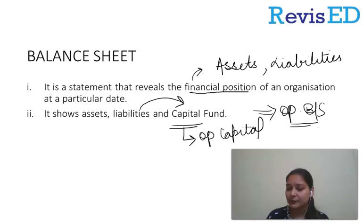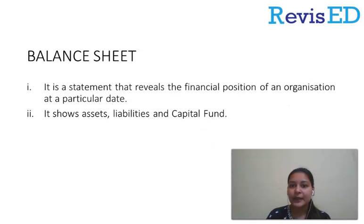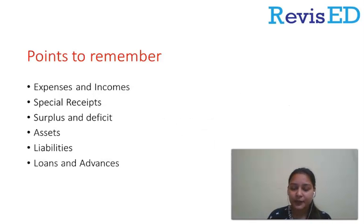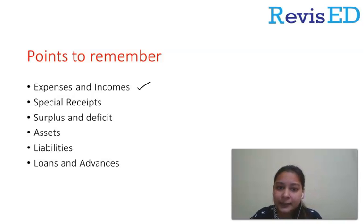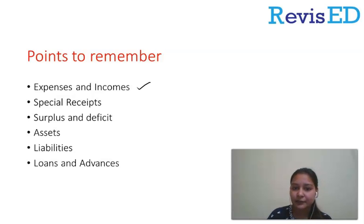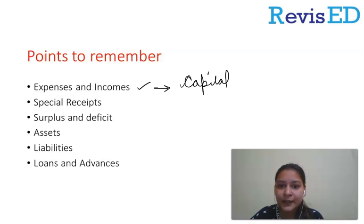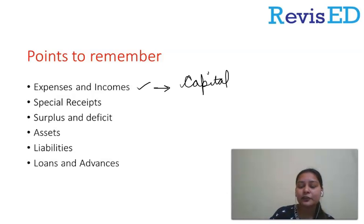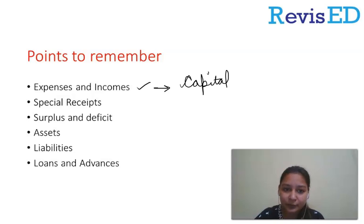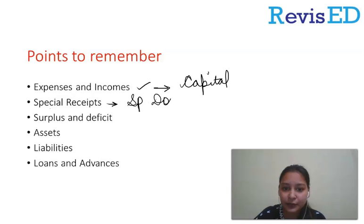There are some important points to remember while preparing the balance sheet. First: income and expenses — does the balance sheet include income and expenses of a revenue nature? No. Only items of a capital nature are included. If something is not of capital nature, we do not include it. Revenue nature income and expenses will not be recorded here.